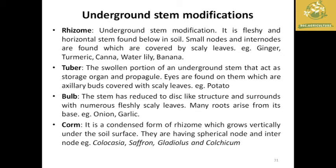Tubers are swollen portions of the underground stem that act as storing agents and propagules; example: potato. Tubers have axillary buds covered by scales used for propagation. Bulbs have a disc-like structure surrounded by numerous fleshy scales with roots arising from the base; examples: onion and garlic. Corms are similar to rhizomes but grow vertically under the soil with spherical nodes and internodes; examples: Colocasia and saffron.